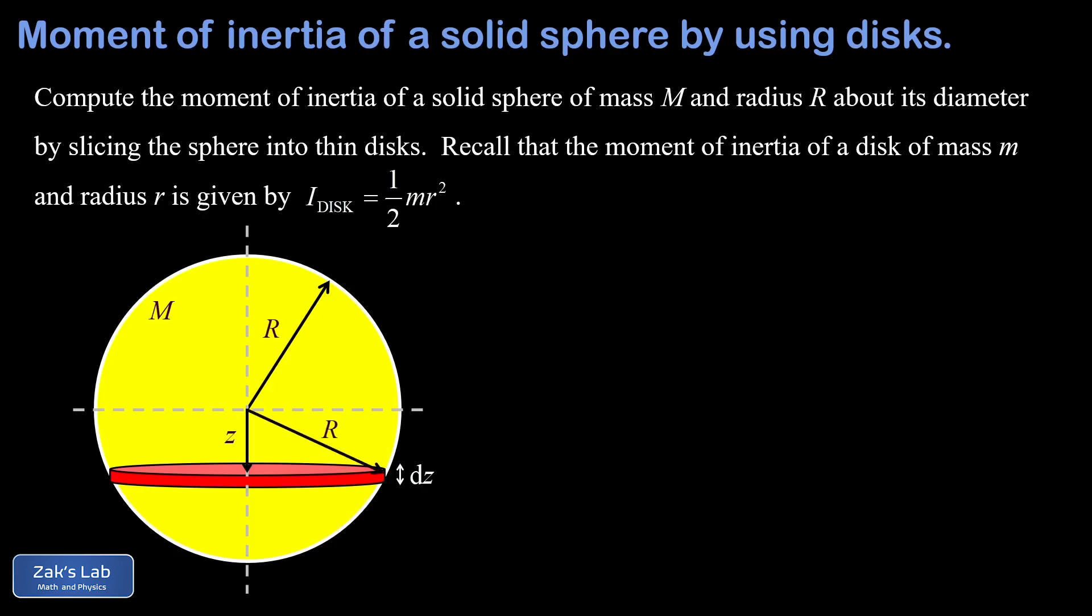It's really important to realize that as we choose different z values, the radius of the disk is changing. The disks are very small toward the bottom and top of the sphere and very wide, actually close to big R, near the equator. So the disk radius is changing and we need to express that in terms of the position variable z.